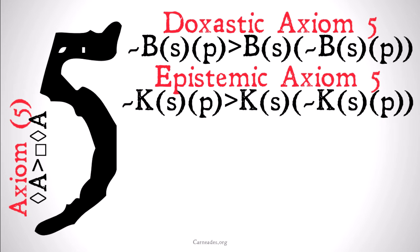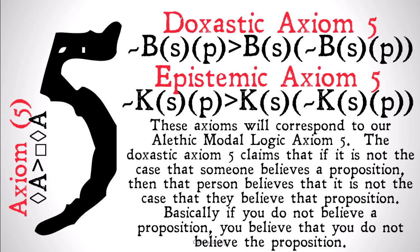The epistemic and doxastic axiom fives are going to be equally controversial and are going to map isomorphically onto axiom five. They're going to look like this: if it's not the case that S believes that P, then S believes that it's not the case that S believes that P. Or, if it's not the case that S knows that P, then it is the case that S knows that it's not the case that S knows that P.